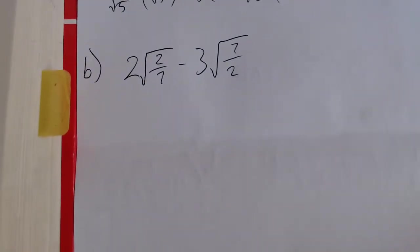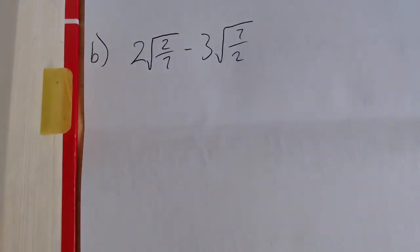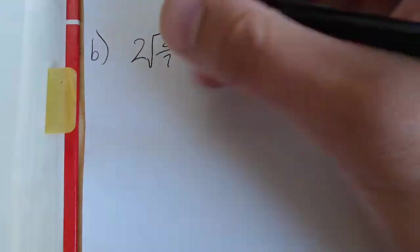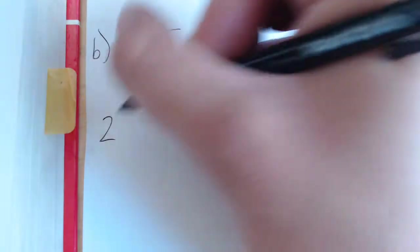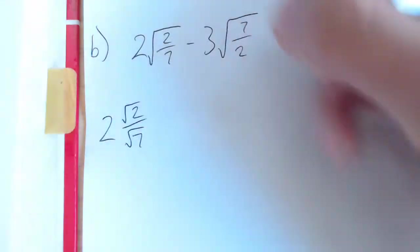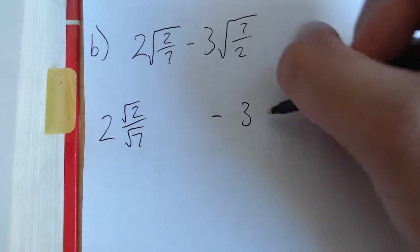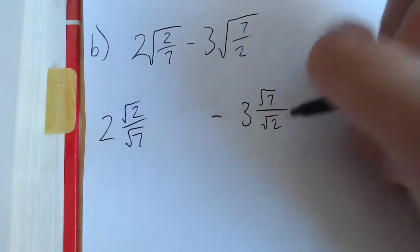Second problem, same thing with addition, and then they add some whole numbers on the side. So we're just going to do the same thing. We'll rewrite our numbers down here: 2 root 2 over root 7, give that some space, and then minus 3 times root 7 over root 2.